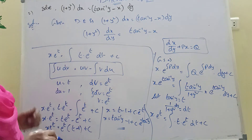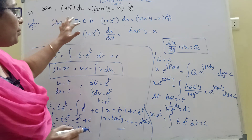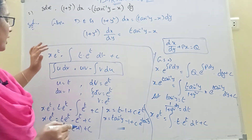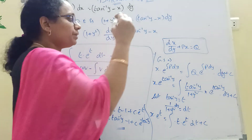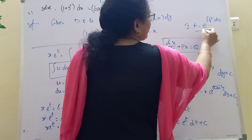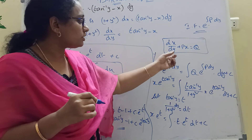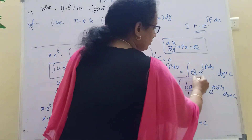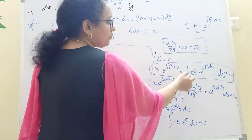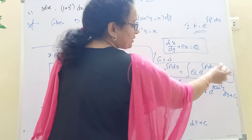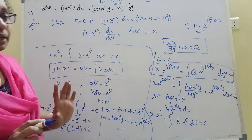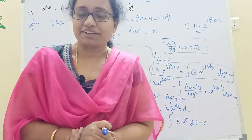This is the final answer. To summarize, the integral factor formula for dx/dy plus Px equals Q is: integrating factor equals e^(∫P dy), and the general solution is x times the integrating factor equals the integration of Q times the integrating factor dy plus C. These are the two differential equation formulas. Thank you very much — please share with friends and like the video.